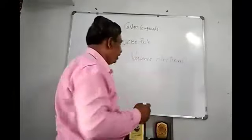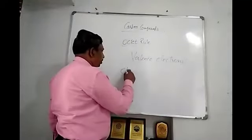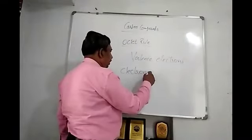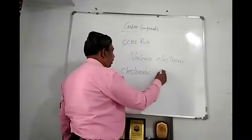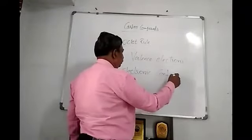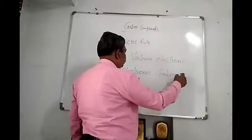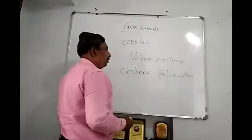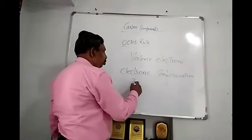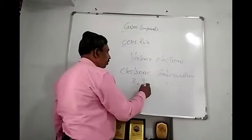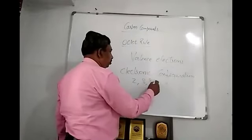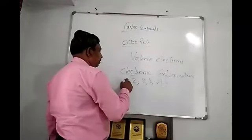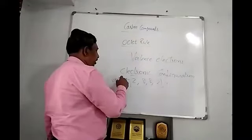So when we write the electronic configuration — for example, calcium has the electronic configuration 2, 8, 8, 2 — this is the best way to remember the electronic configuration of calcium.